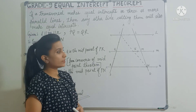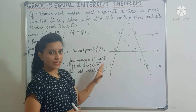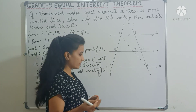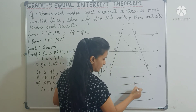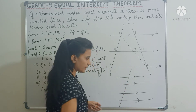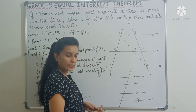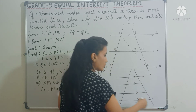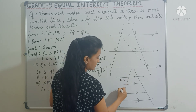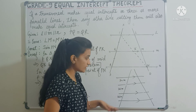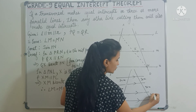So let's quickly recap everything. The theorem says that if there are three or more than three parallel lines — let's say there are four parallel lines — and a transversal makes equal intercepts on these parallel lines, meaning the lengths of the intercepts are equal, then any other transversal will also make equal intercepts. If this is two centimetres, this is also two centimetres, and this is also two centimetres, and the other transversal gives three centimetres, then the other two intercepts will also be three centimetres.